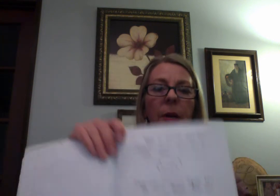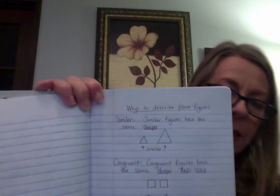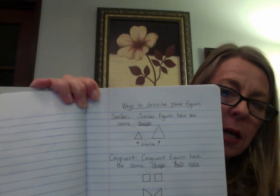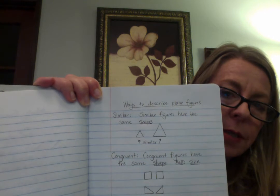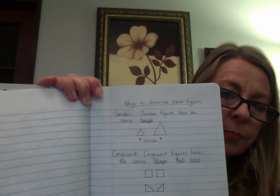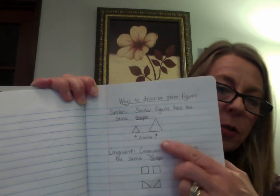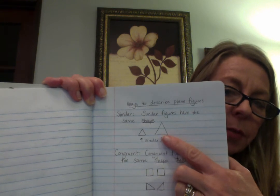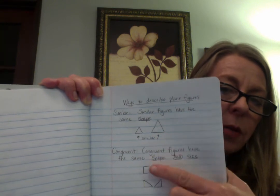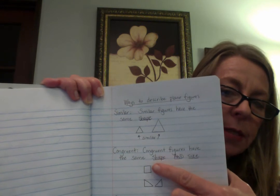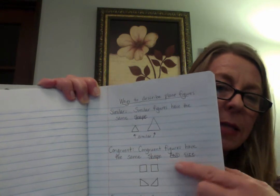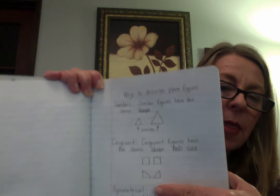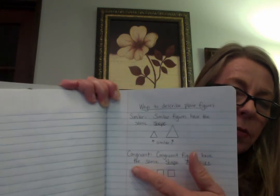I'm going to hold up those definitions again so you can make sure you have them. Similar — similar figures have the same shape. We have two triangles that are not the same size but are the same shape — these are similar. Congruent — congruent figures have the same shape and size. Same shape, same size — that makes them congruent.